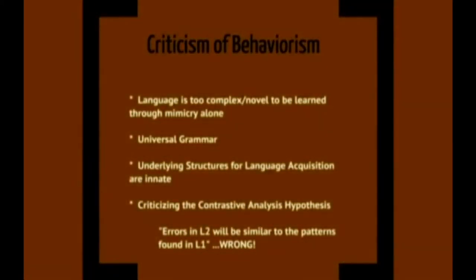Noam Chomsky brought an end to behaviorism by stating that language is too complex and novel to be learned through mimicry alone. He states that there must be some universal grammar that is built into the brain. This universal grammar structures the way someone learns their first or second language, and the underlying structures for language acquisition are innate. Another critique comes from the contrastive analysis hypothesis, which supports behaviorism and holds that errors in second language learning should be based on differences between the second language and the learner's first language — and this is wrong.